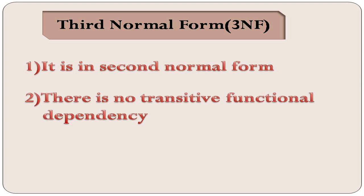What is second normal form? All non-key attributes are fully dependent on the primary key. The second condition is there is no transitive functional dependency.